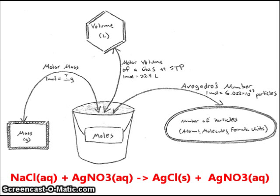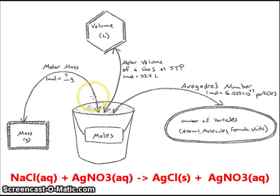My strategy for solving this problem is going to be based on utilization of the mole bucket. Because we know the starting mass of the two different reactants, we want to start here on the diagram. Using the molar mass of either of those two compounds, we can convert that starting amount of a reactant to number of moles of a reactant. This allows us to work in the mole bucket, where we are going to use the ratios of products and reactants from the balanced chemical equation to convert from talking about a reactant to talking about an amount of product.